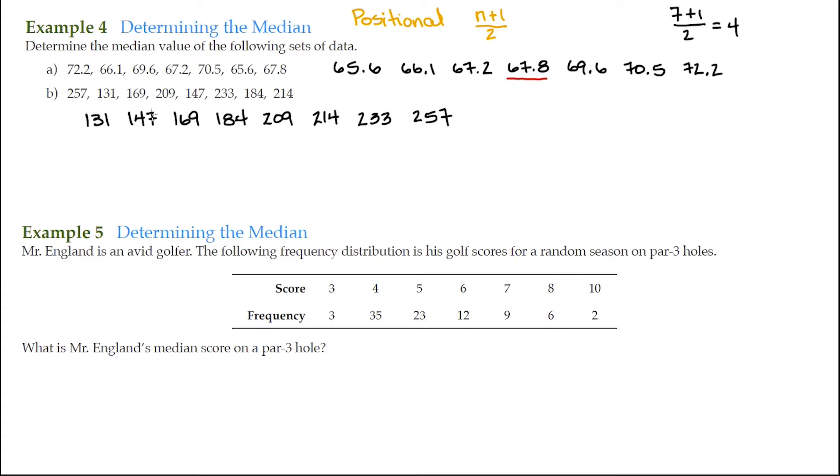We have 1, 2, 3, 4, 5, 6, 7, and 8 data values. So the position that we're looking for is going to be 8 plus 1 divided by 2. That's how we find our position. That's 9 divided by 2. That's 4.5.